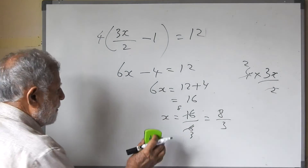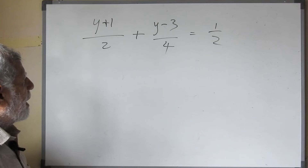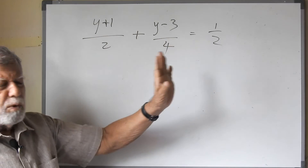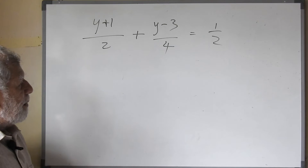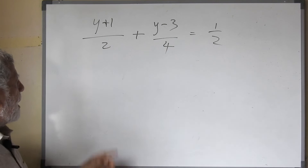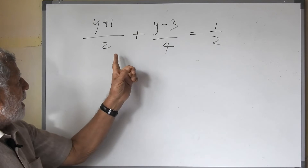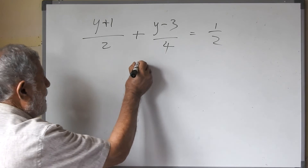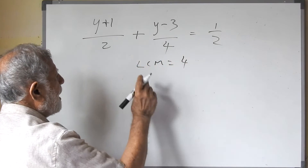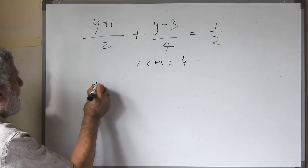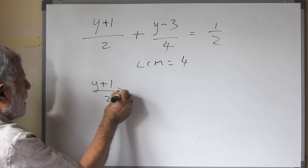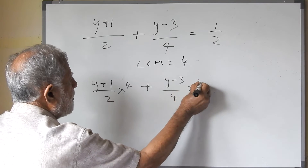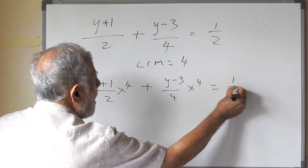One more example, children. Look at this: y plus 1 upon 2, plus y minus 3 upon 4, equals one-half. There are 3 terms, so no question of cross-multiplying. Find the LCM for all the denominators — 2, 4, and 2. Since 2 goes into 4, the LCM is 4. So multiply each and every term by 4.